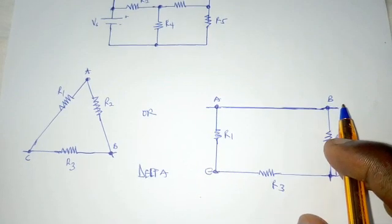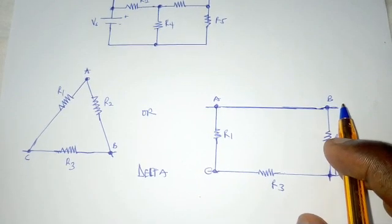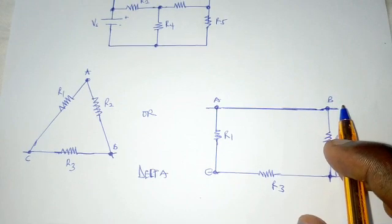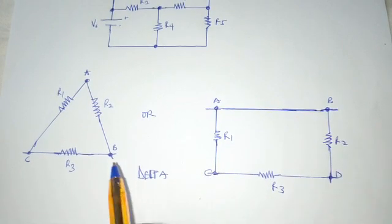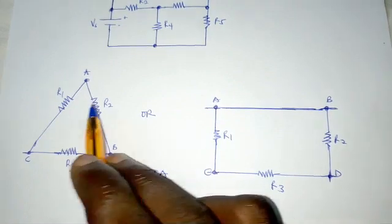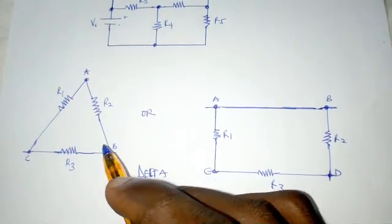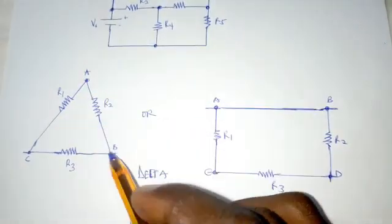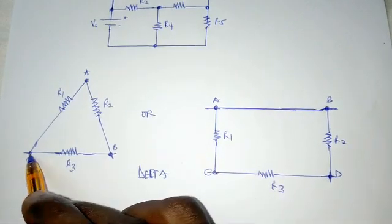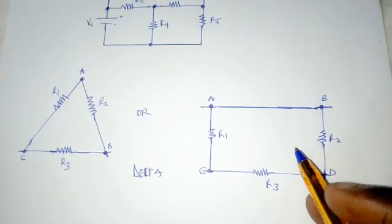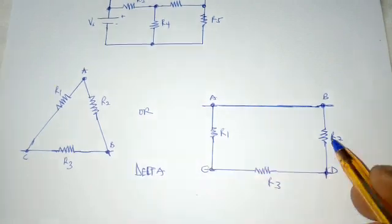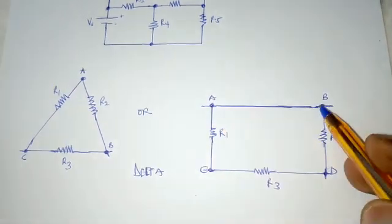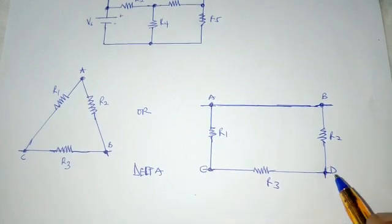Three resistors are said to be in delta if they are connected end to end, as we can see here. These three resistors R1, R2, and R3 are connected end to end at points A, B, and C.